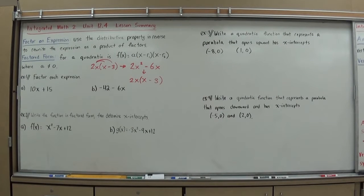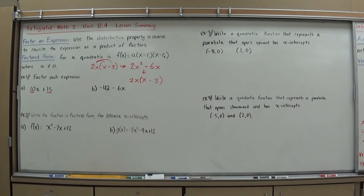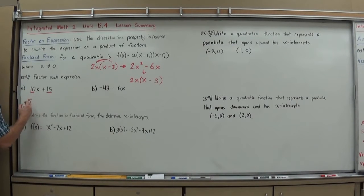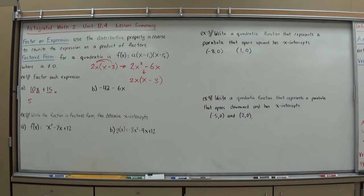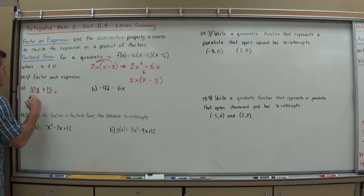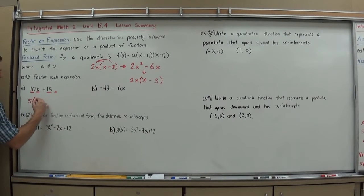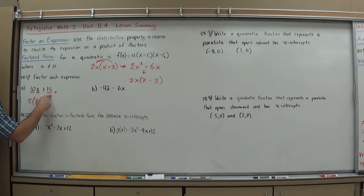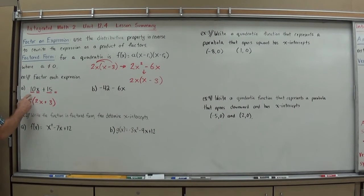Let's factor each expression. First, I look at the numbers — what's the greatest number that goes into 10 and 15? The GCF is 5. Then I look at the variables — they don't both have one, so there is no variable I can take out. In that case, 5 is the only GCF. I set up my parentheses and figure out what to multiply by to get each term. 5 times 2x is 10x. 5 times 3 is 15, so I add 3. Check your factoring: 5 times 2x is 10x, 5 times 3 is 15. Correctly factored.